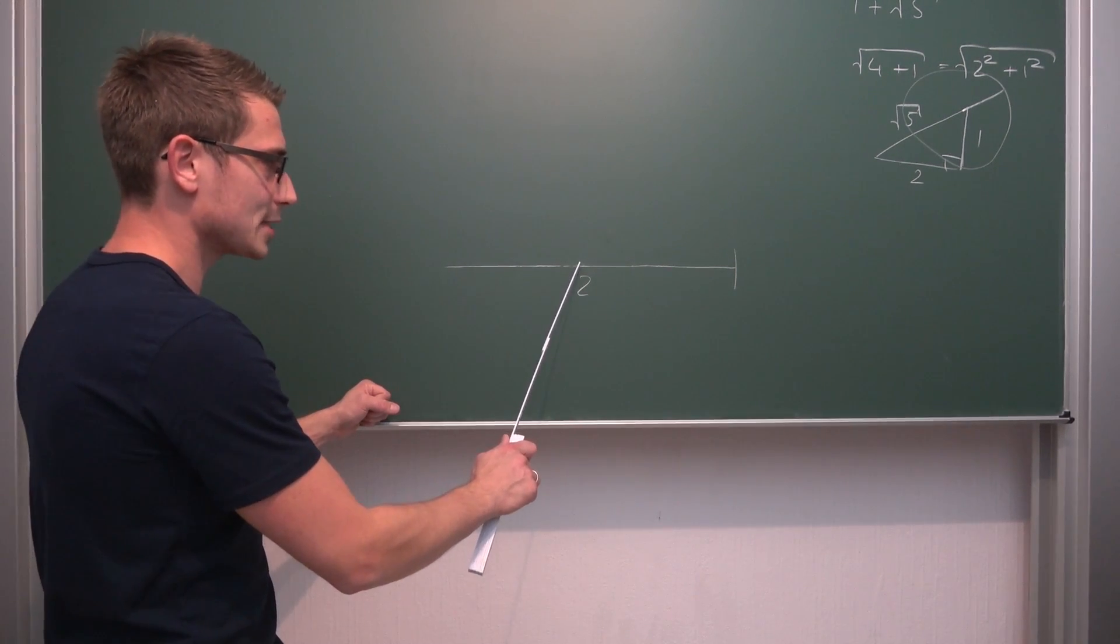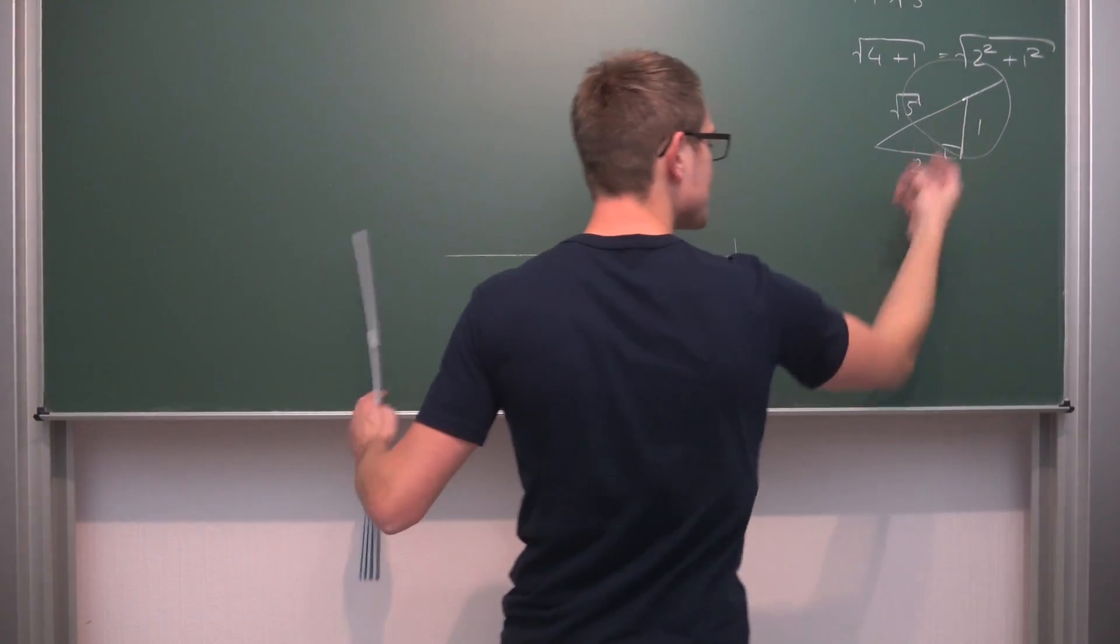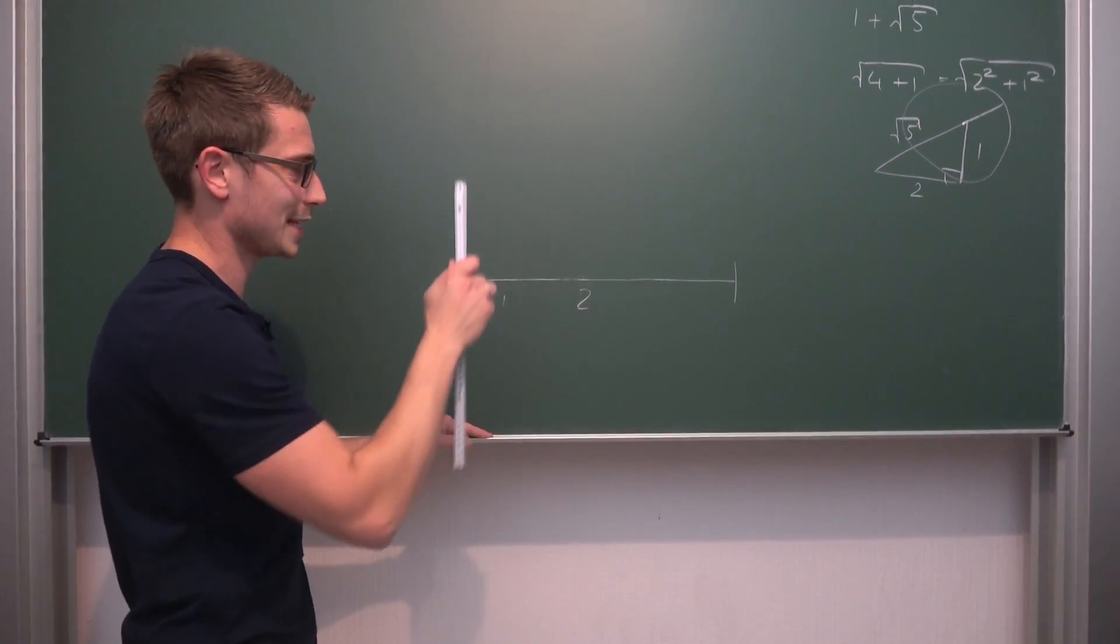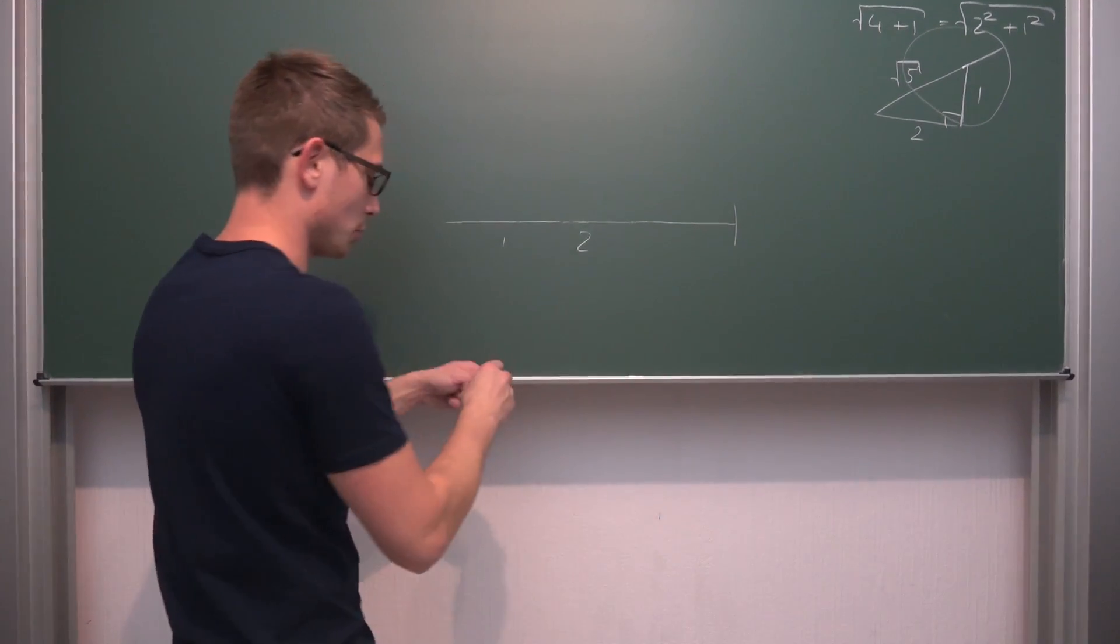I'm going to bisect this one such that we get a side length of 1 once again. So we are just going to flip this a tiny little bit. We are going to mirror our right triangle that we have sketched here. Now I need to rearrange my compass.